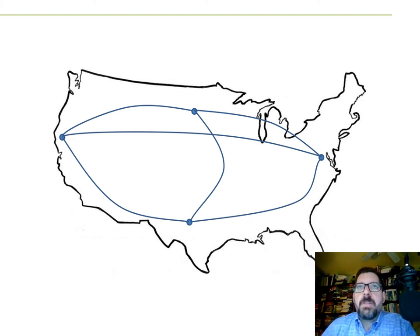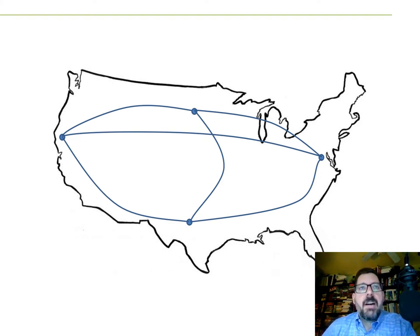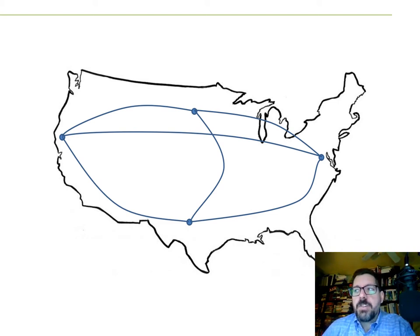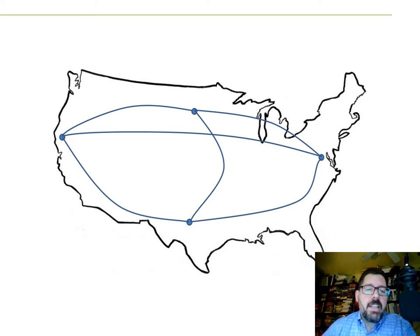As many of you probably know, the concept of the internet was developed by DARPA — a Department of Defense research agency — which later transferred that intellectual property to the public domain. Pretty much all of our network communications is grounded in what came from the original ARPANET, which was the civilian version of DARPA's work that created the internet.